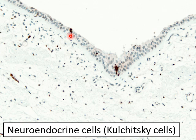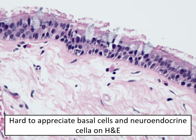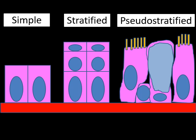Kulchitsky cells are very few in number compared to basal cells — just one here and one there. The synaptophysin stain can be used to identify them, among other stains. On H&E, basal cells and neuroendocrine cells are not distinguishable without special staining. Neuroendocrine cells are absolutely impossible to see on a standard H&E stain.